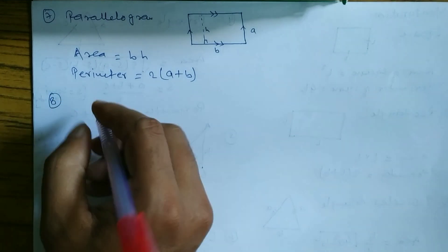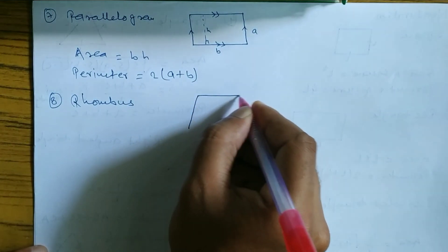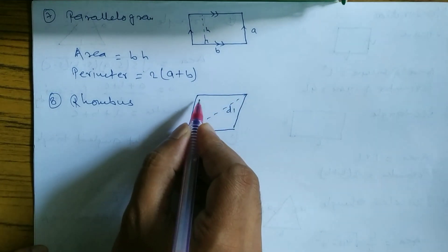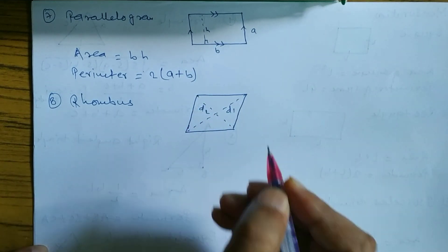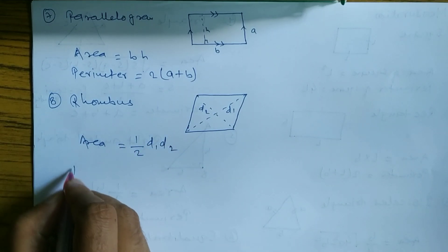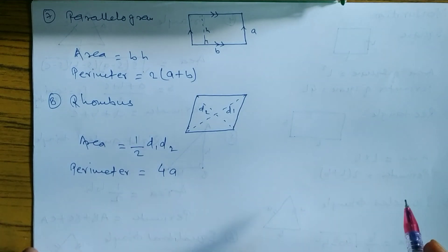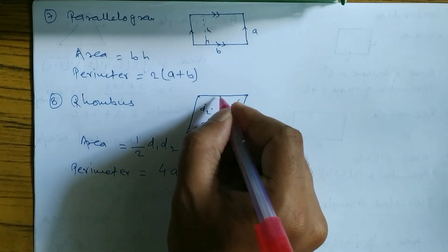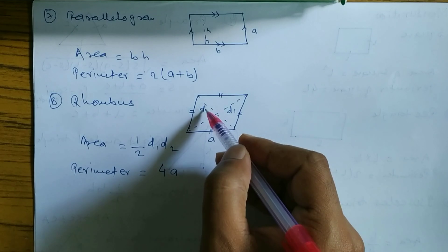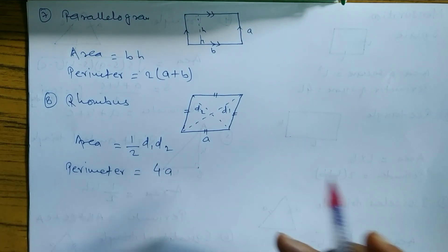Number 8 is the rhombus. This one is d1 — diagonal one — and this one is d2 — diagonal two. Area of rhombus formula is (1/2) × d1 × d2. Perimeter formula is 4a, since in a rhombus all sides are equal. If this one is 'a', then all sides are 'a'.